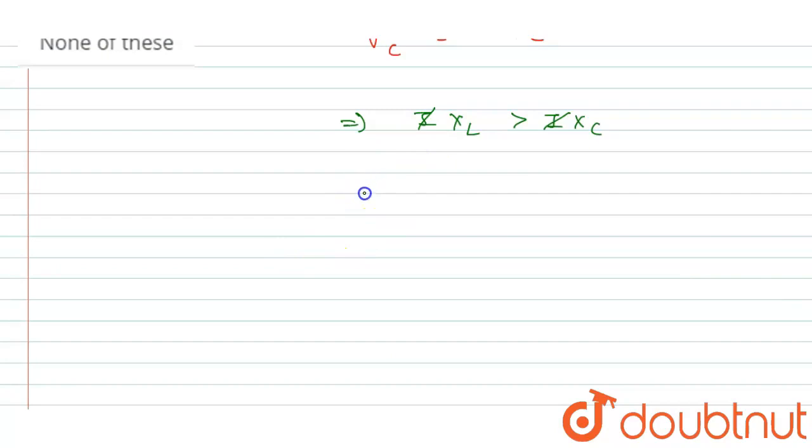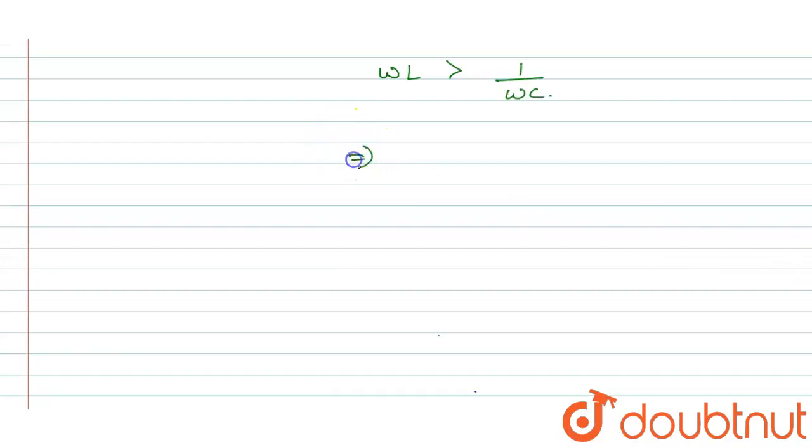We know that XL is equal to omega L and XC is equal to 1 by omega C. When we're simplifying this equation, we got omega square is greater than 1 by LC.